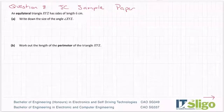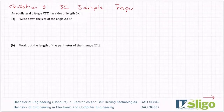Okay, question eight. An equilateral triangle X, Y, Z has sides of length 6 centimeters. Write down the size of the angle X, Y, Z.